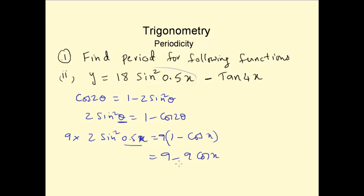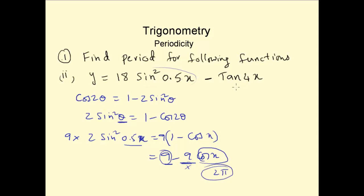The constant 9 has no periodicity. The amplitude -9 doesn't matter. The period of cos(x) is 2π/1 = 2π. Similarly, for -tan(4x), the minus is just the amplitude, so we don't worry about that. tan(4x) has a period of π/n = π/4.